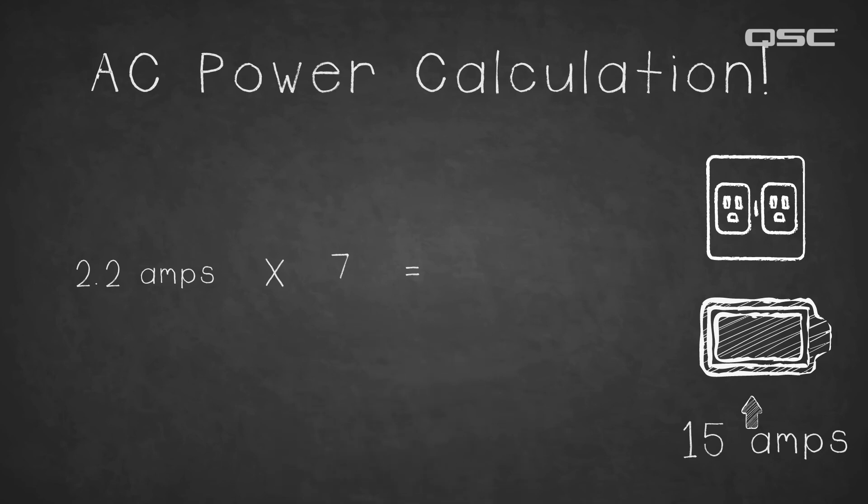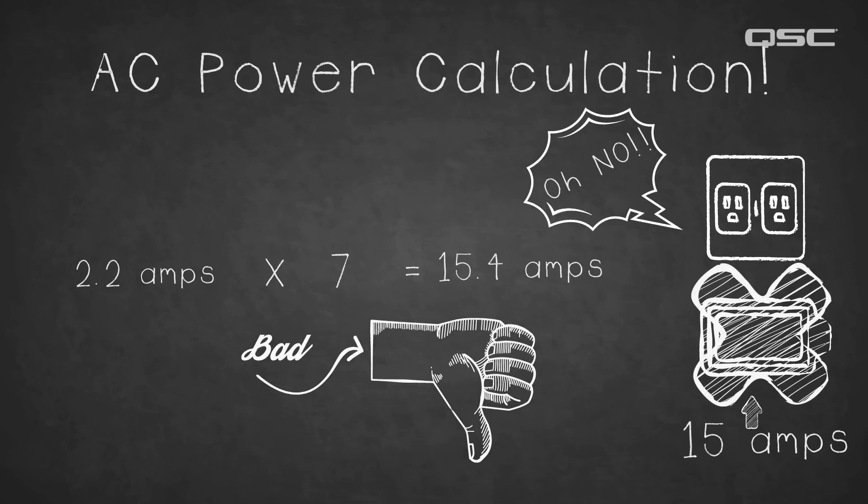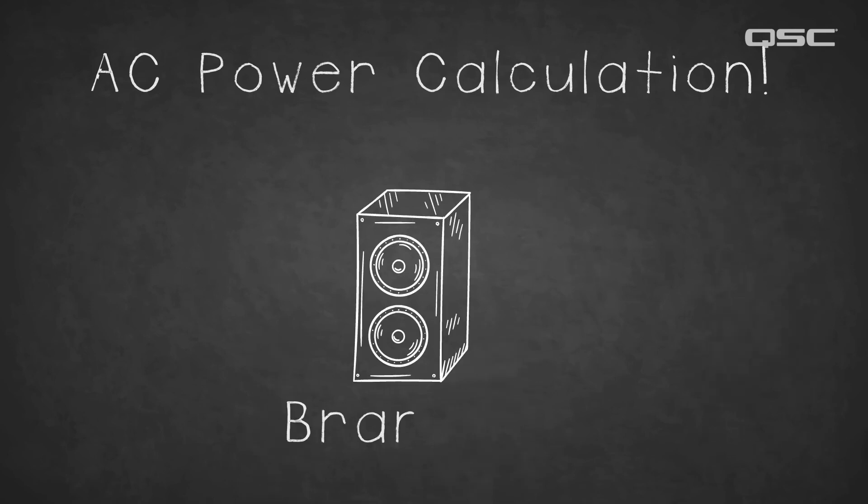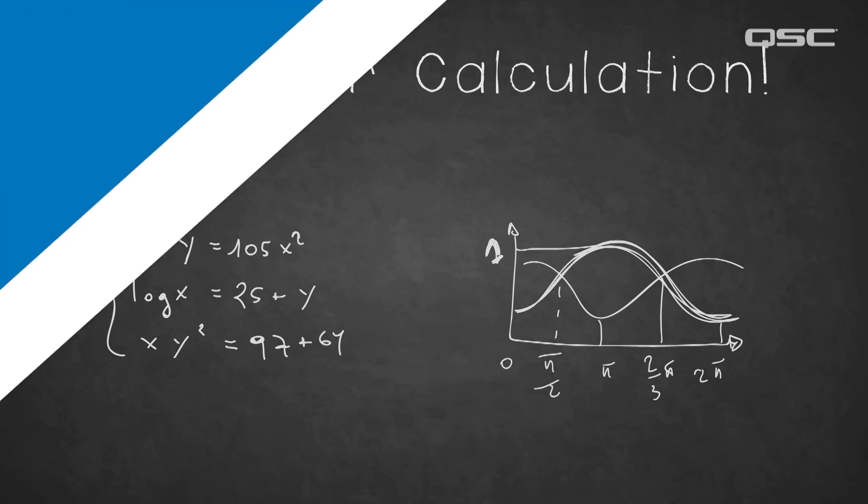If we were to add one more, we'd end up with 15.4 amps and now we've exceeded what the outlet can handle. Of course, this can be applied to any piece of equipment, not just K.2 loudspeakers.